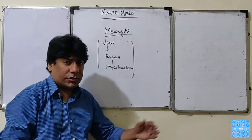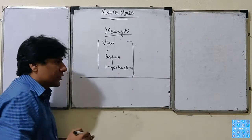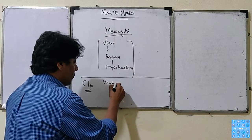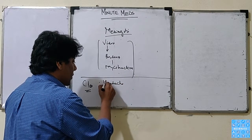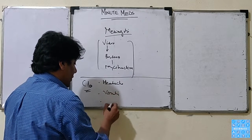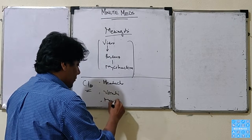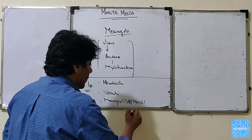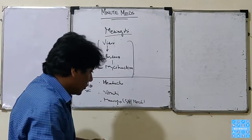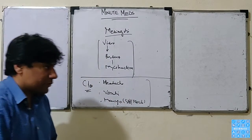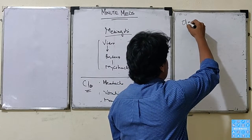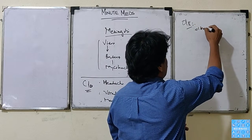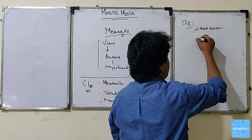The difference lies in the duration of the illness. The commonest presentation — how we segregate this into the cause — is that it usually has a triad of headache, vomiting, and the signs of meningitis. These are the usual triad: headache, vomiting, and body stiffness.